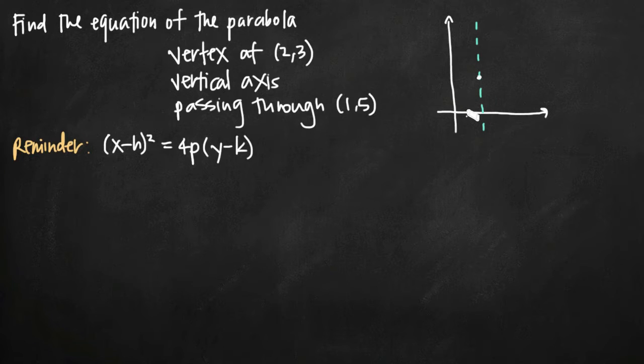We also know that the parabola passes through the point (1,5), which is going to be about right here. So automatically, because we have that point, we know that the parabola must open up because it passes through a point that is higher than its vertex. So we know we have a parabola that opens up, and we know that it shifted off of the origin. Our vertex is not at the origin (0,0), it's at (2,3). So it's a shifted parabola that opens up.